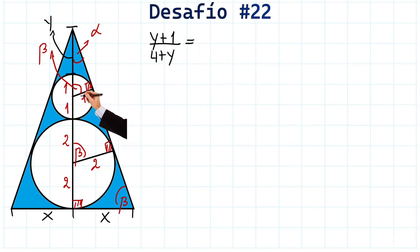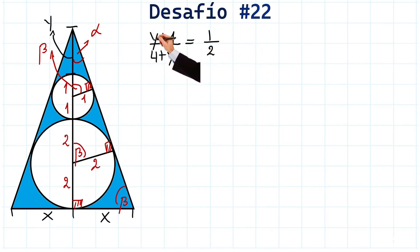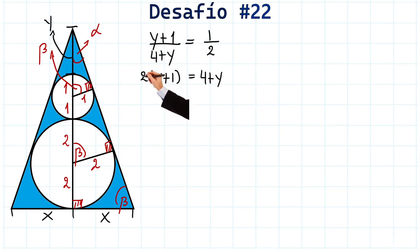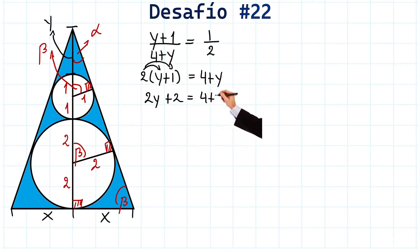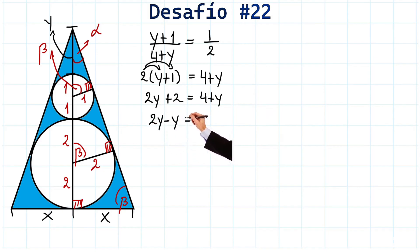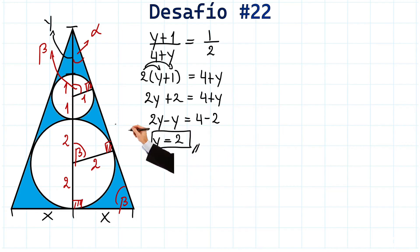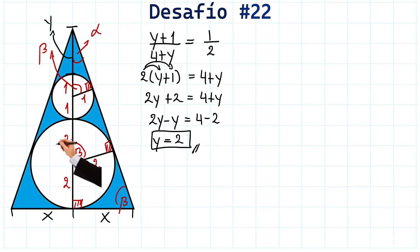Relating the bases with the ratio 1 to 2, we cross-multiply to get 2 times (y plus 1) equals 1 times (4 plus y). Applying the distributive property gives us 2y plus 2 equals 4 plus y. Moving y to the left and 2 to the right gives 2y minus y equals 4 minus 2, so y equals 2. Fascinating — we have found that y equals 2, matching the radius of this circle here.